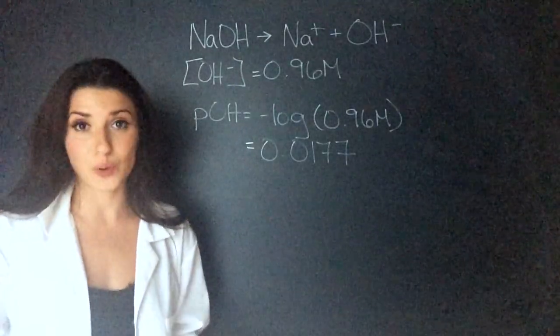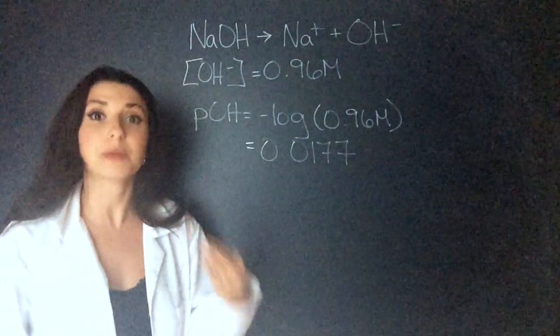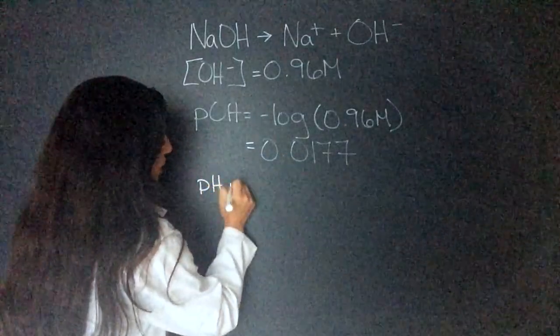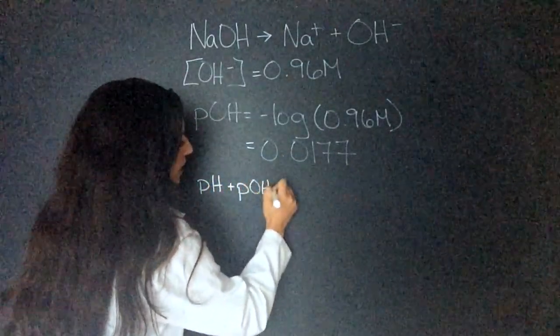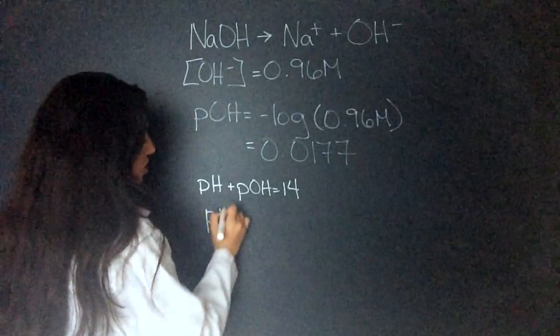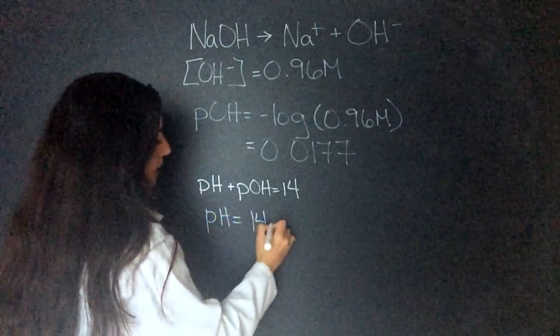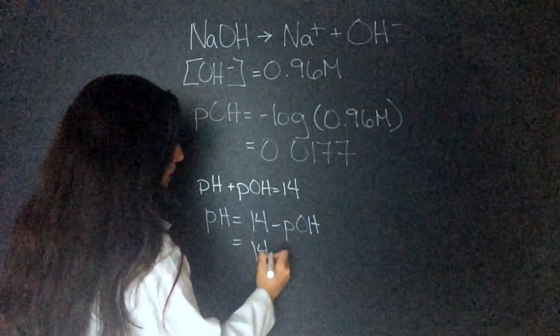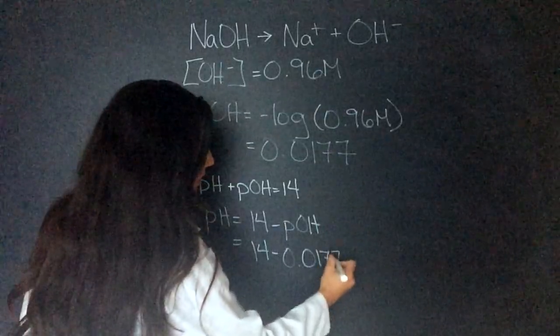This is great, but that's not what the question asked for. We have to find the pH. So we're going to use this pH plus POH equals 14 equation. So the pH is going to equal 14 minus the POH, which equals 14 minus 0.0177.